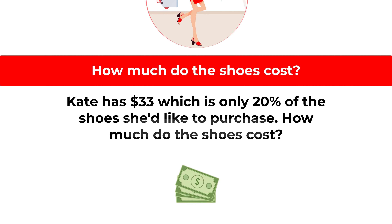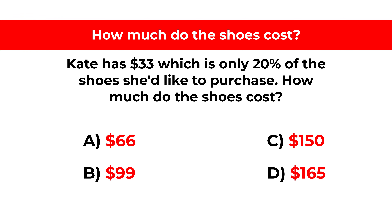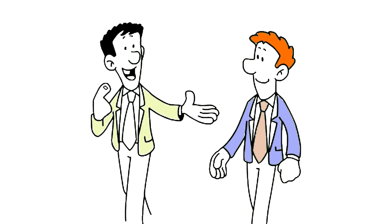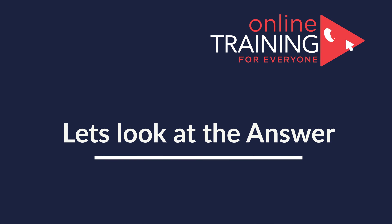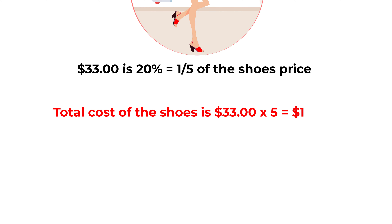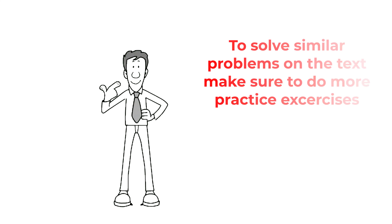Here's a cool question that you frequently get on the test. Kate has $33, which is only 20% of the cost of shoes she would like to purchase. How much do the shoes cost? Choices are: A) $66, B) $99, C) $150, D) $165. The answer is simple: $33 is 20%, or one-fifth, of the shoes' price. So total cost = 33 × 5 = $165. The correct answer is choice D: $165.